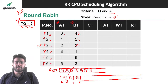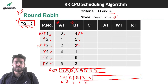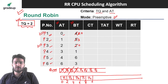At 6 units of time, P6 has also arrived, so we enqueue P6. Now we schedule P1 again — remaining burst time is 2, equal to time quantum, so we schedule for 2 units from 6 to 8. P1 completes and is dequeued. Next is P4 with burst time 1 and time quantum 2; we schedule it for 1 unit from 8 to 9. P4 completes and is dequeued.